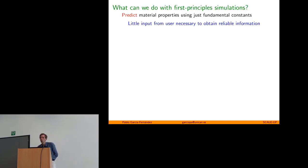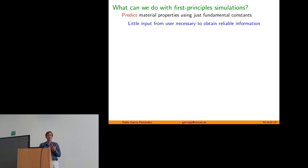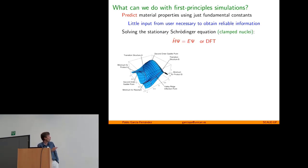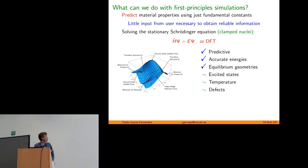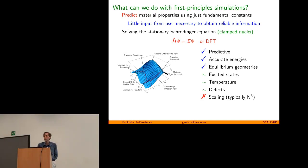You all know very well what we can do with first principles. One of the main things it's good for is that with very little input we can reliably predict properties. We solve the Schrödinger equation or do DFT and get geometries and accurate energies, but when we move away from energies and geometries we start having problems - excited states, temperature, defects are difficult, and calculating larger systems is a major challenge.